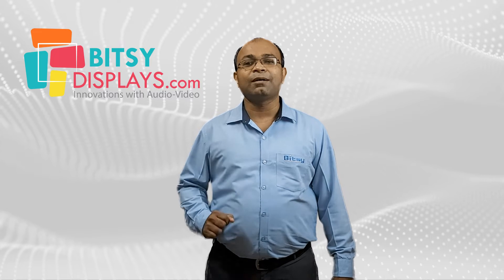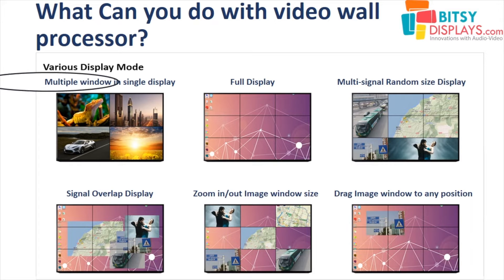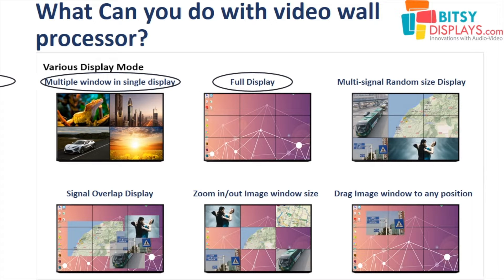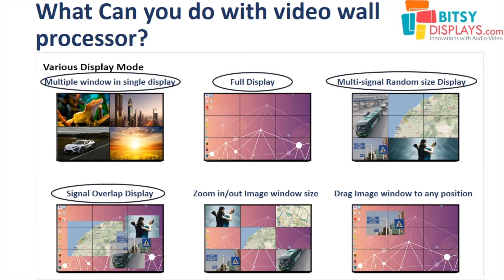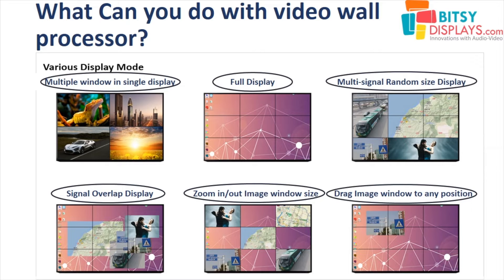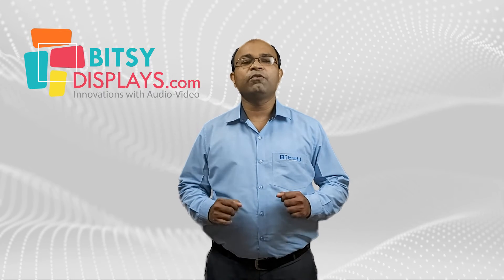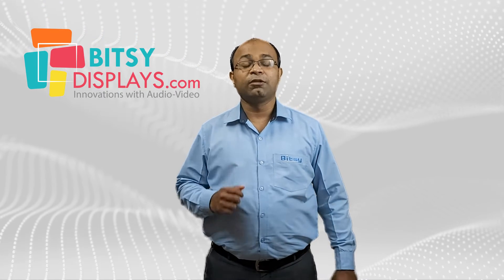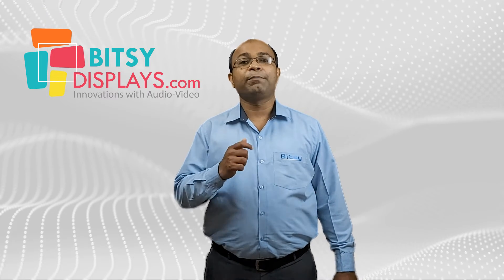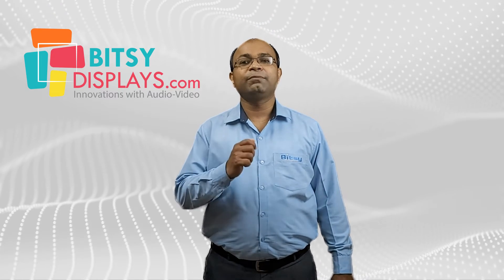So what all can you do with a video wall processor? Let me show you some examples. Various display modes include: up to 8 windows in a single display, full display, multi-signal random size display, signal overlap display, zoom in and out of image window size, and drag an image window to any position. The two modes of video wall presentation of multiple inputs are picture-by-picture and picture-in-picture.